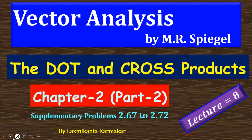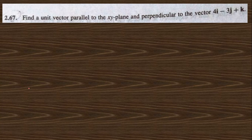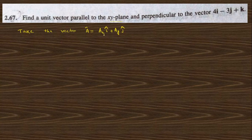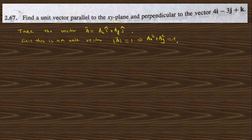Today's first question is 2.67: find a unit vector parallel to the xy plane and perpendicular to a given vector. Take this vector as A, which is a_x i-cap plus a_y j-cap, because being in the xy plane we only have i-cap and j-cap components. Since this is a unit vector, the magnitude is one, so a_x squared plus a_y squared equals one.